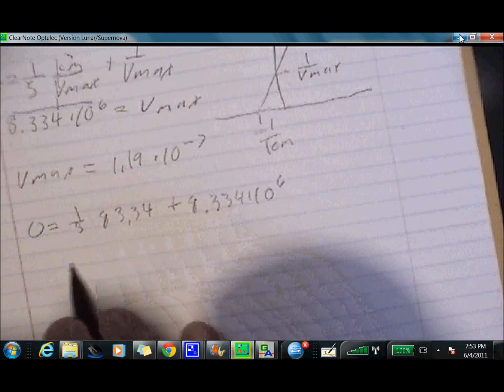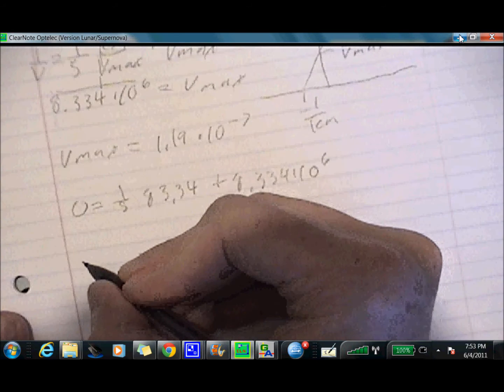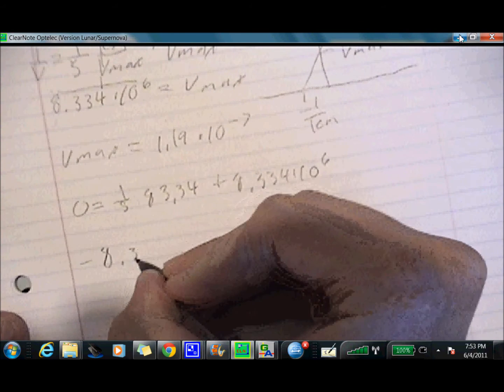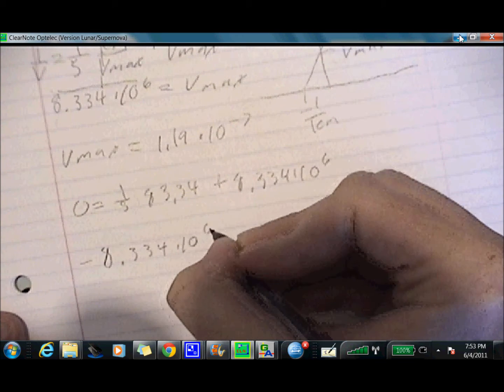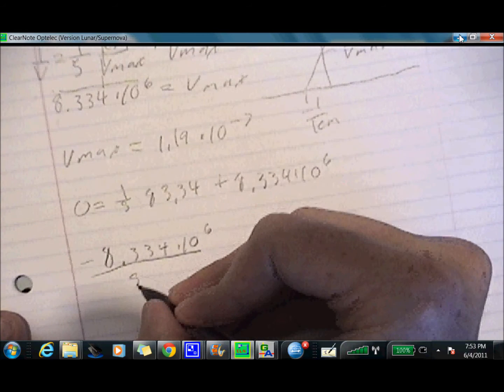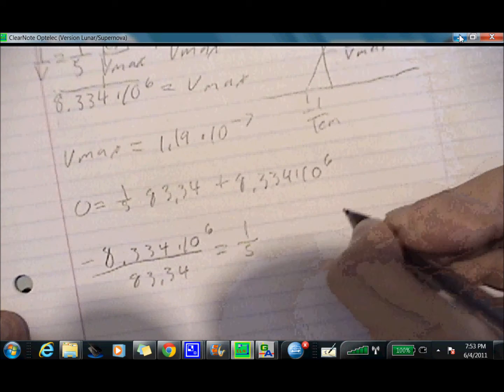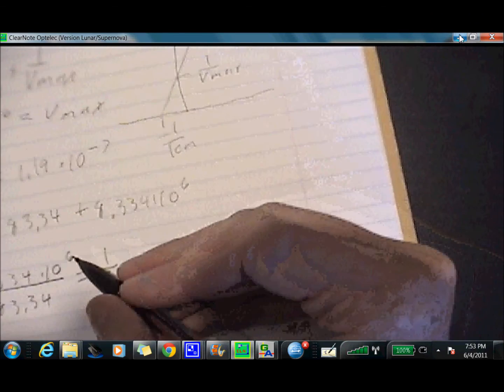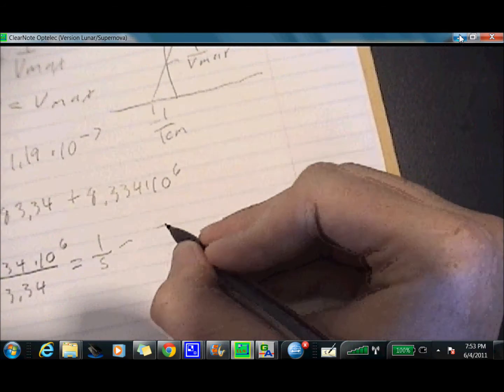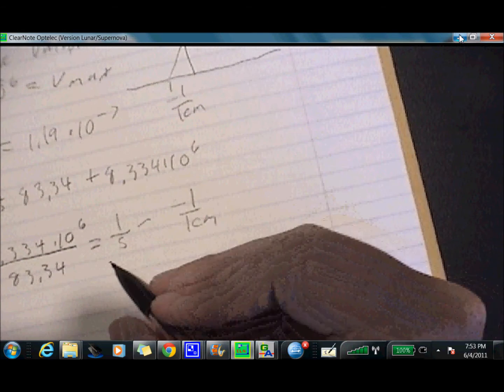I'm basically going to subtract this and divide it by this number. So it's going to be negative 8.334 times 10 to the sixth divided by 83.34 and that's going to equal your one over S or your X intercept. So now, right now, because this is the X intercept, I'm going to convert this to negative one over KM.